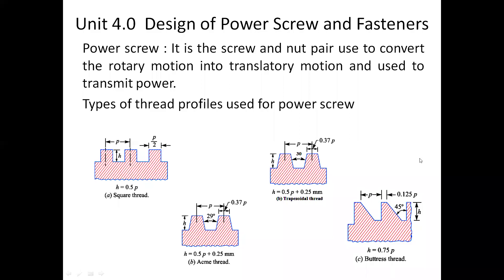Chapter 4 is the design of power screws and fasteners. The first question is: what is meant by a power screw, and what is the difference between a simple screw and a power screw? The word 'power' is attached because these screws are used to transmit power. The basic purpose of a power screw is to transmit rotary motion into translatory motion. When power is to be transmitted from rotary motion to translatory motion, a screw is used, and that type of screw is called a power screw. There are a variety of power screws available as per the application, advantages, and use.